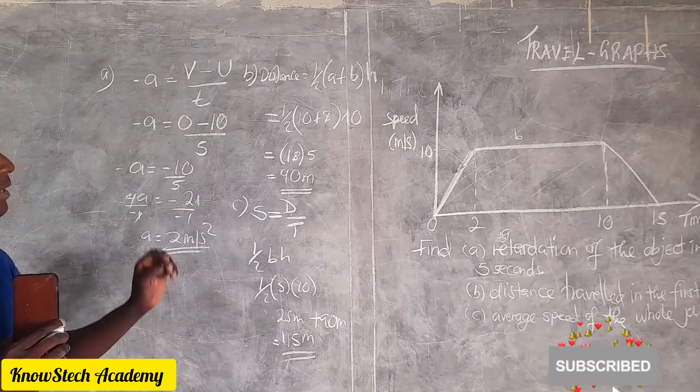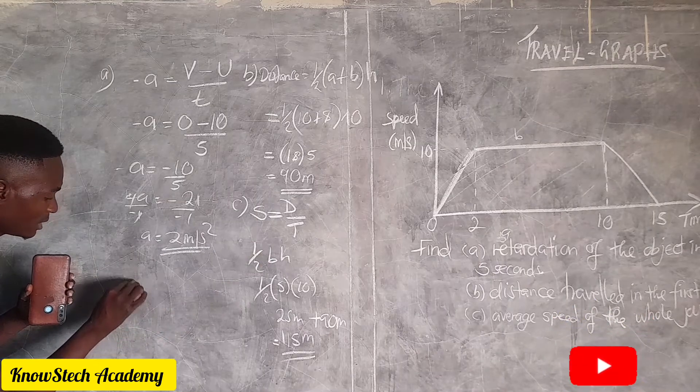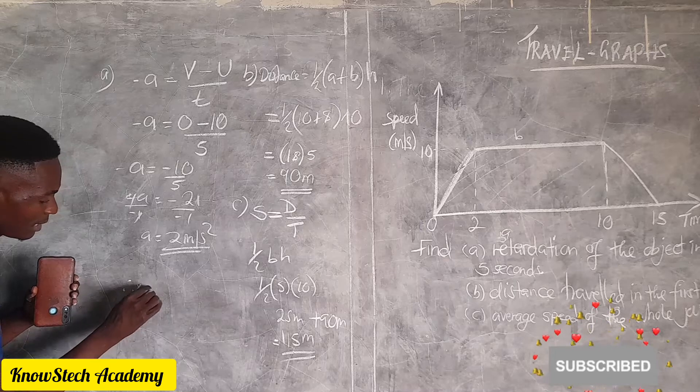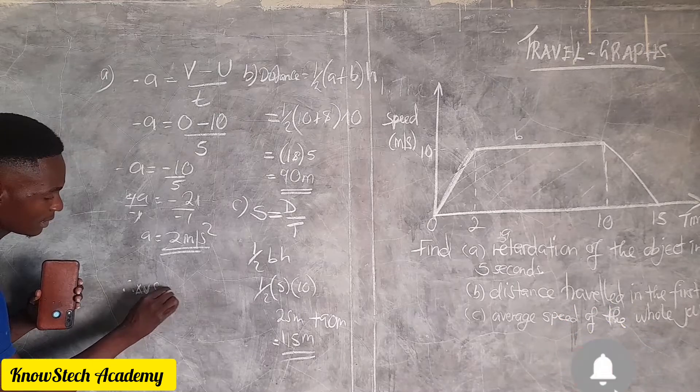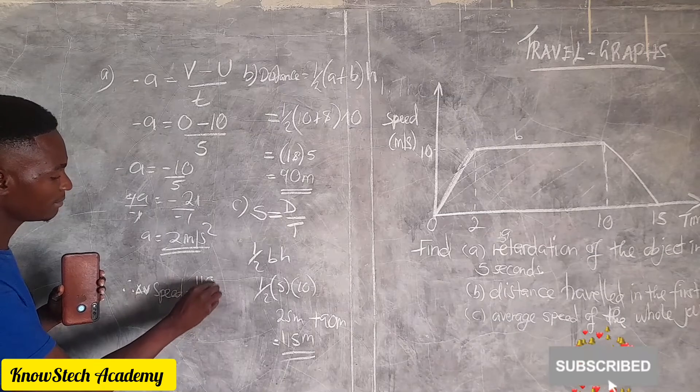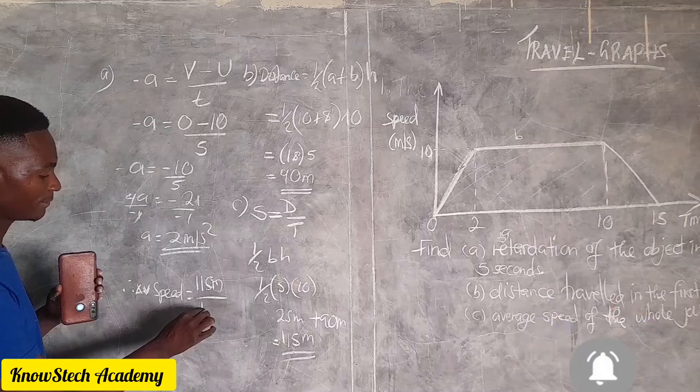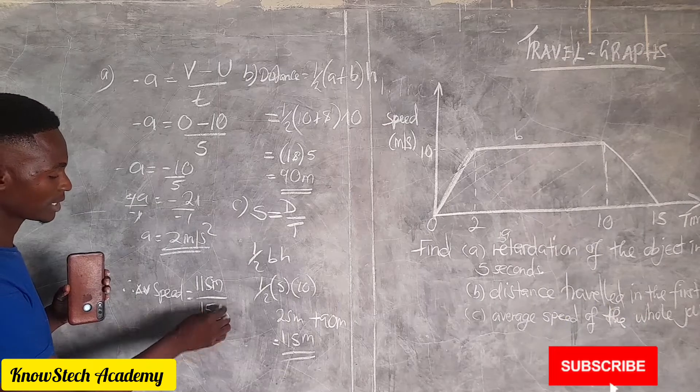Then let's find the average speed. Therefore the average speed is distance covered which is 115 meters over the time taken which is 15 seconds.